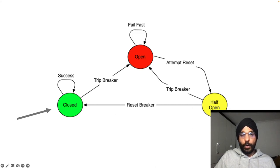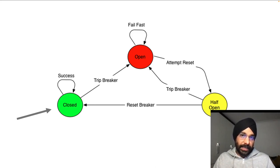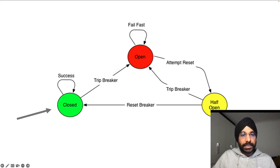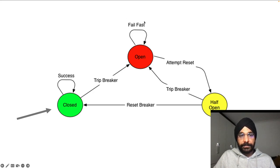Then we have the final stage called Half-Open. After a short period in the open state, an operation is attempted to see whether it can complete successfully. We're essentially checking whether the resource that was failing earlier has come back. If the answer is no, we go back to the open state. If the service has recovered and we see successful responses, we reset the breaker and go back to the closed state, remaining there until we start seeing failures again.